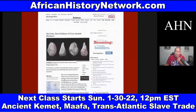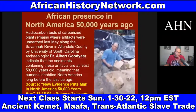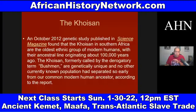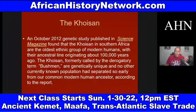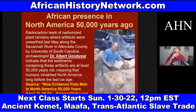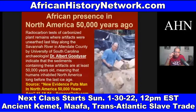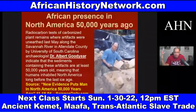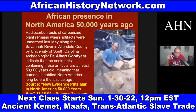We look at African civilization, including the Khoisan, who have the oldest DNA on the planet. We were in this land we call the United States at least 51,700 years ago — that was Dr. Albert Goodyear's discovery. A November 18, 2004 article from ScienceDaily.com is titled 'New Evidence Puts Man in North America 50,000 Years Ago.' You can still read that article on ScienceDaily.com. The summary states: radio carbon tests of carbonized plant remains found alongside artifacts unearthed along the Savannah River in Allendale County, South Carolina by University of South Carolina archaeologist Dr. Albert Goodyear indicate the sediments are at least 50,000 years old, meaning humans inhabited North America long before the last ice age.